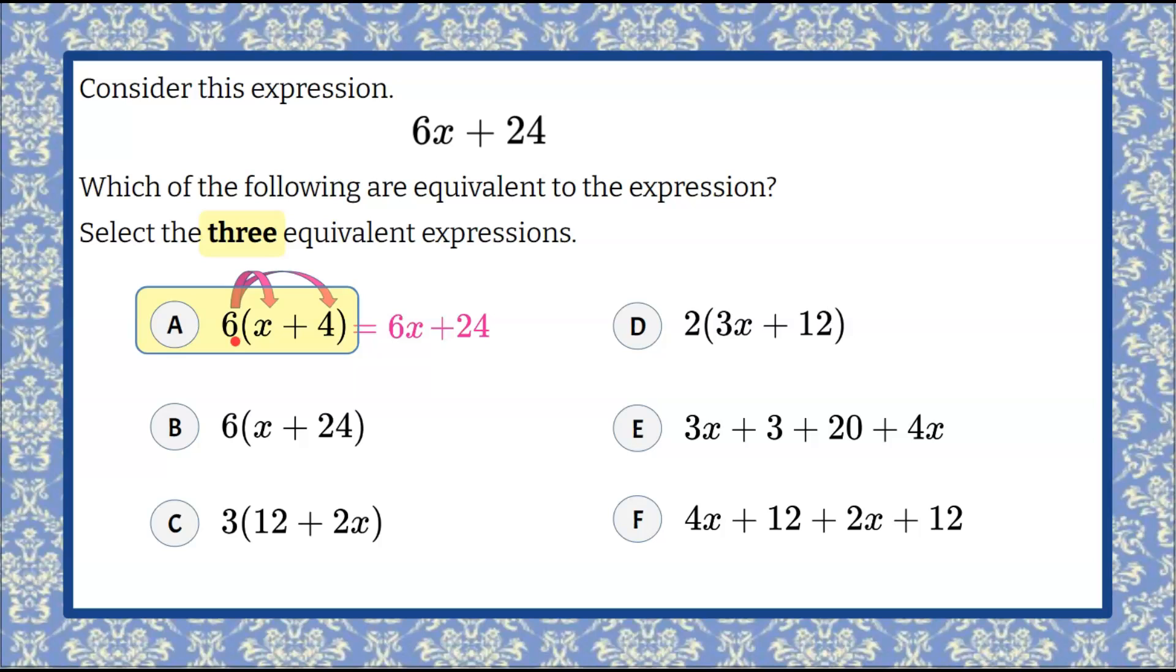Let's look at B. 6 times x is 6x. 6 times 24 is going to be greater than 24. So we already know B is not equivalent, but let's do the math. 6 times 24 is 144, not equivalent. So B is not an answer choice.